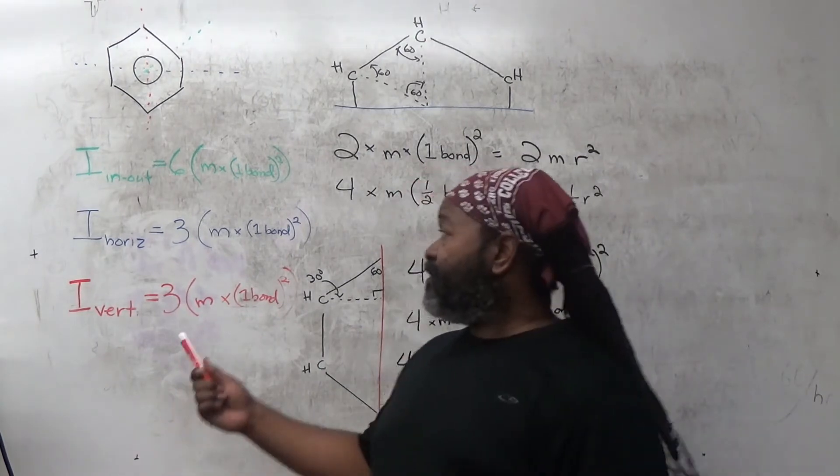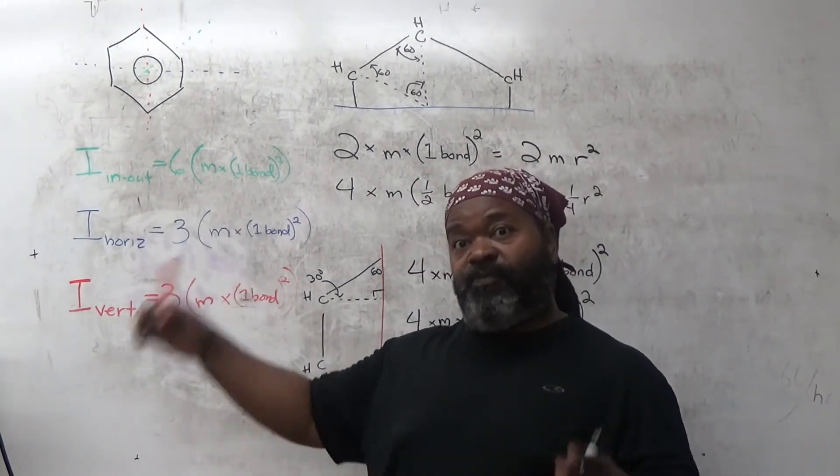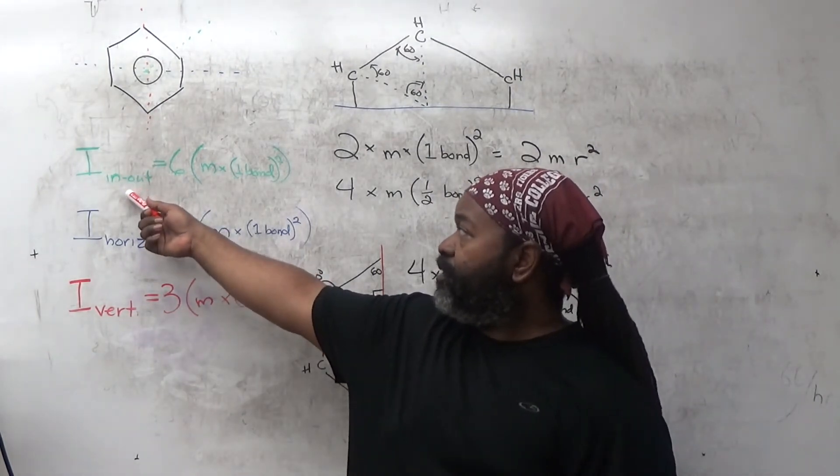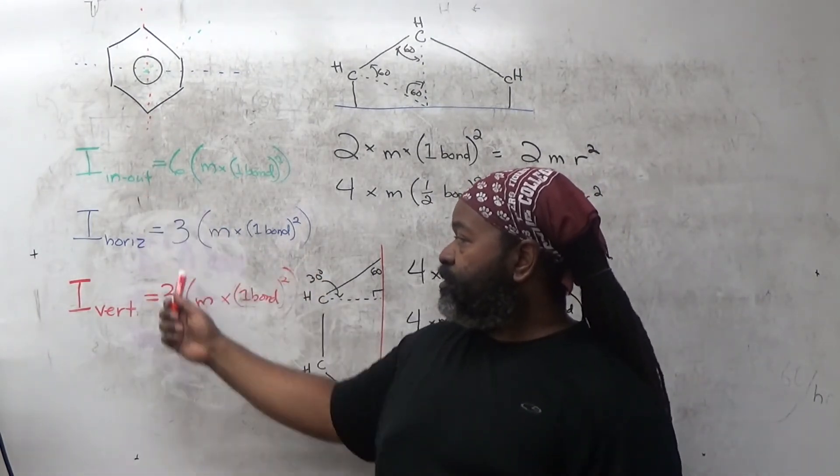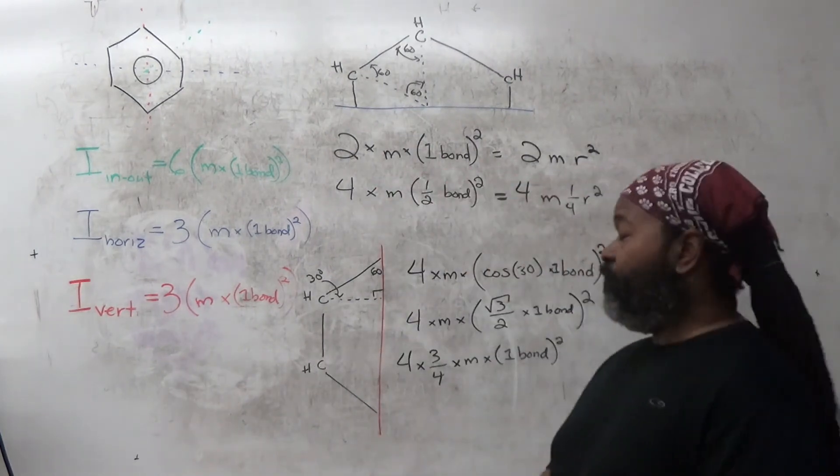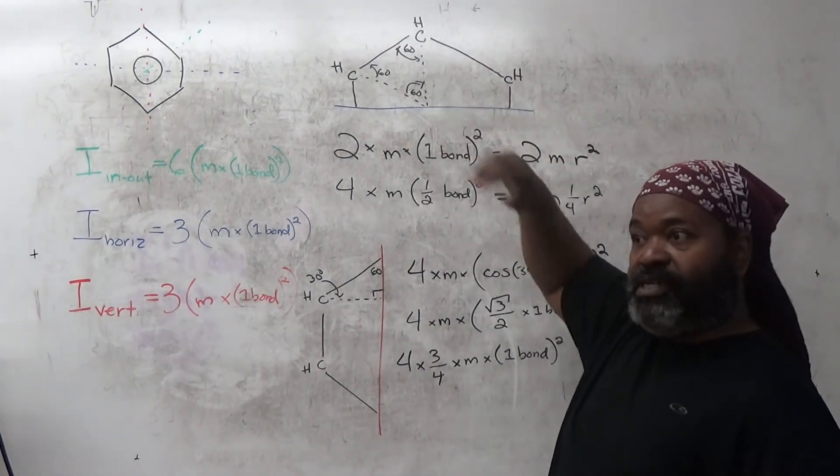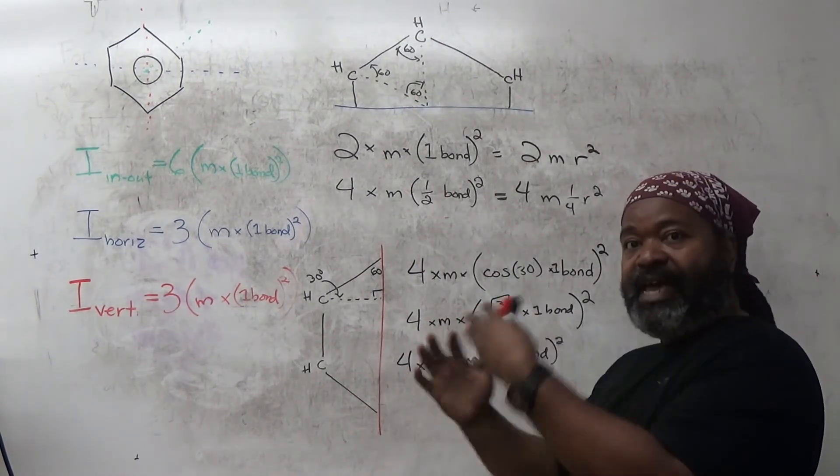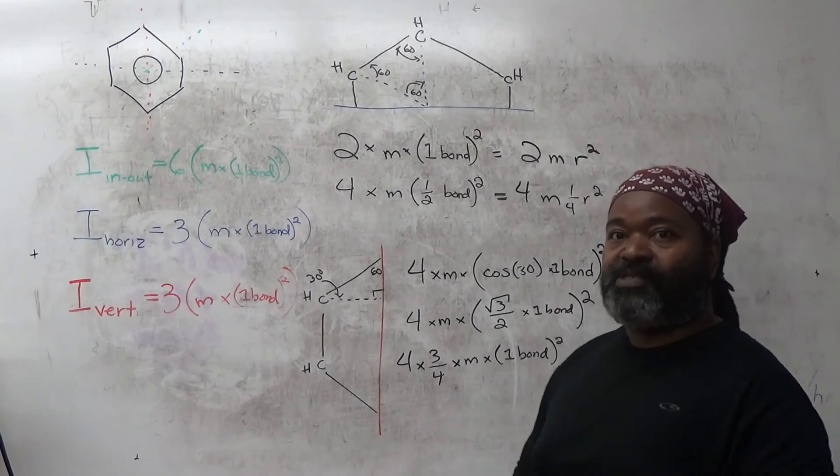So we can now see that this fits the criteria for being oblate, because we have a unique moment of inertia that is larger than 2 identical moments of inertia. And all it took to figure that out was the application of a little bit of trigonometry and a little bit of thinking about the symmetry of the molecule and how we place our axes in three-dimensional space.